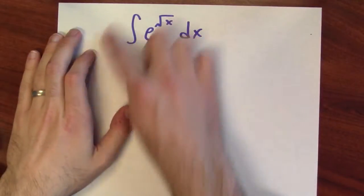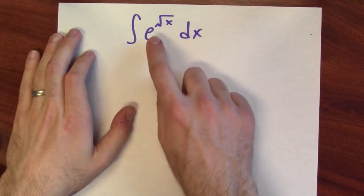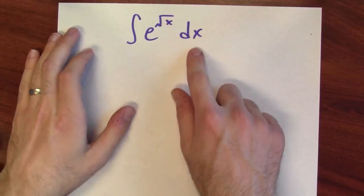Sometimes it isn't clear that you can do integration by parts until after you perform some substitution. For example, let's attack this integral, the integral of e to the square root of x dx.